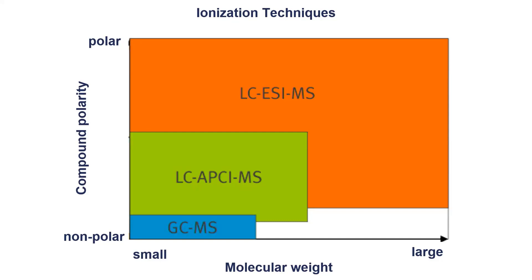Different problems require different ionization techniques. ESI is very common, but not every compound is easily ionizable with it. If you have something that is more non-polar, there is also the option to use atmospheric pressure chemical ionization (APCI). If you have something small and non-polar, maybe GC is the right approach. But if we have something larger and polar, ESI might be the best setup to use.